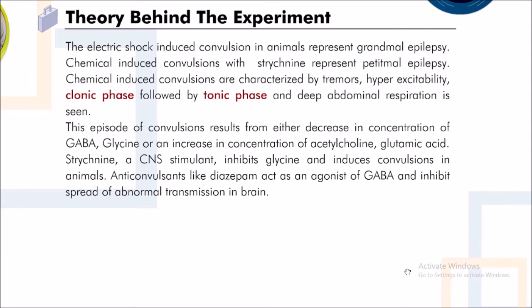Strychnine, a CNS stimulant, inhibits glycine and induces convulsions in animals. Anticonvulsants like Diazepam act as agonists of GABA and inhibit the spread of abnormal transmission in the brain.